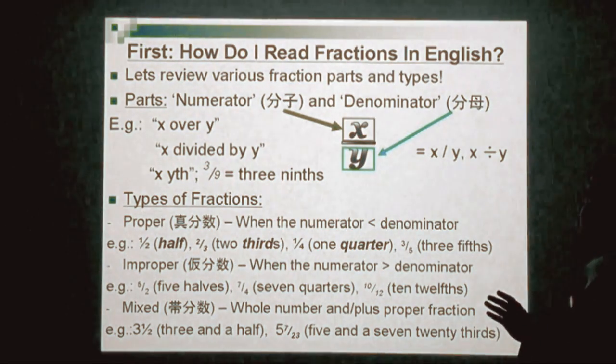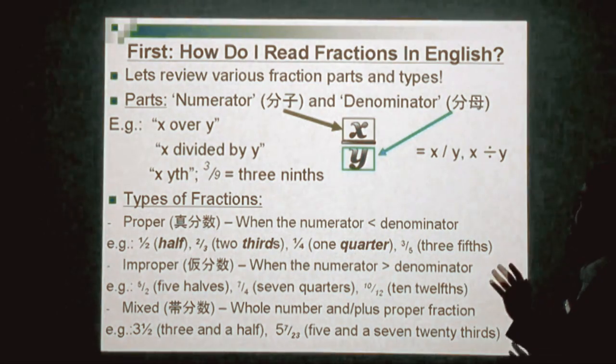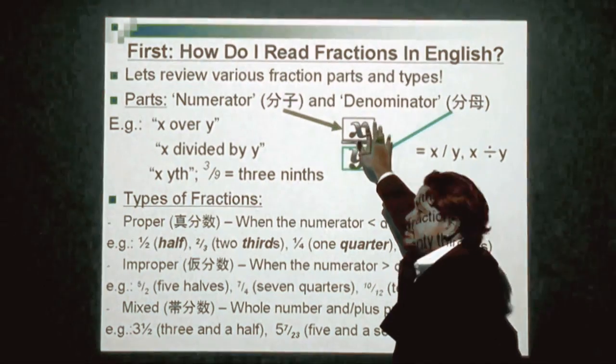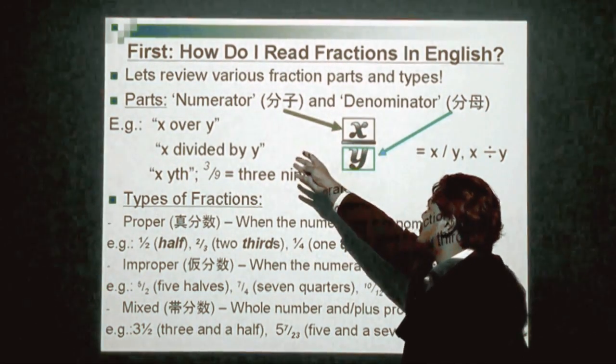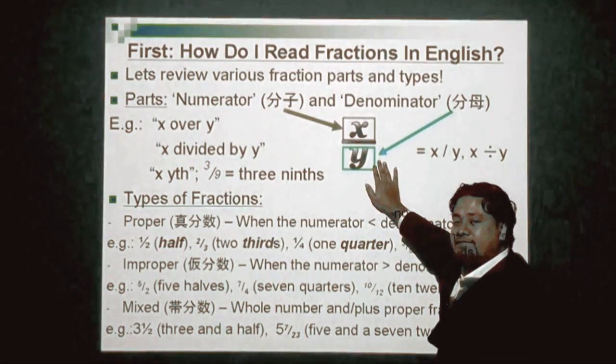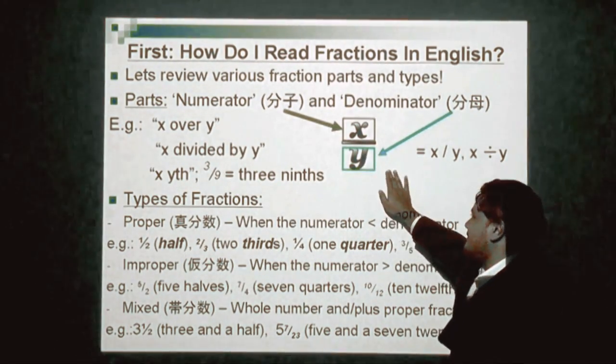Let's review various fraction parts and types. First, parts of a fraction. If you look carefully on the top, the number on the top of a fraction is called a numerator, and a denominator is the value below this line. For your information, this line is actually called the vinculum.